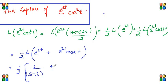And in this case it is s by s square plus a square, but s should be replaced by s minus a. So it is s by s square plus a square. That is this thing.